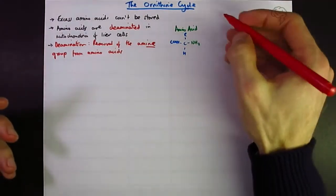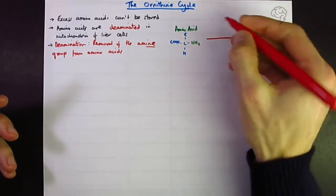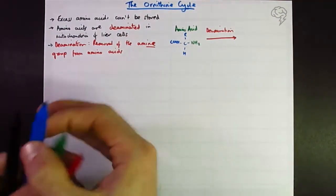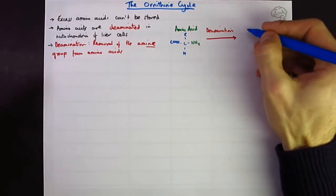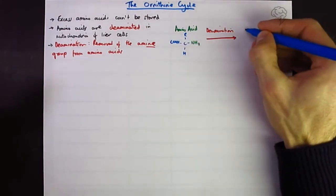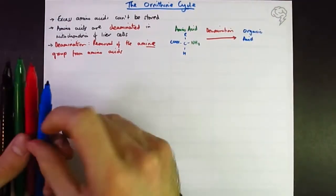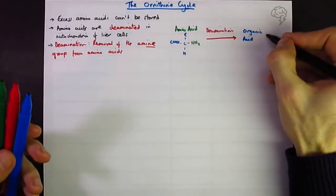The nitrogen-containing part is NH2. This is then broken down through deamination and we end up with an organic acid, which means an acid that contains carbon, and we end up with ammonia which is NH3.